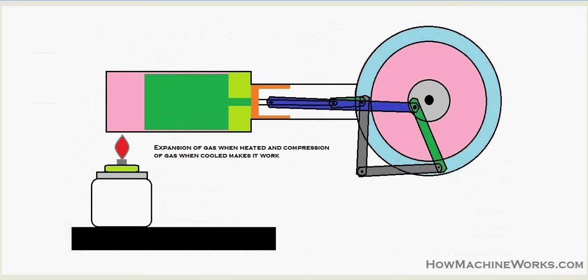The most important thing to understand is that expansion of the gas when heated and compression of gas when cooled is what makes the Stirling engine work. We have air expanding inside the engine on the left-hand side, shown in pink, and on the other side, shown in light green, the air is getting compressed.